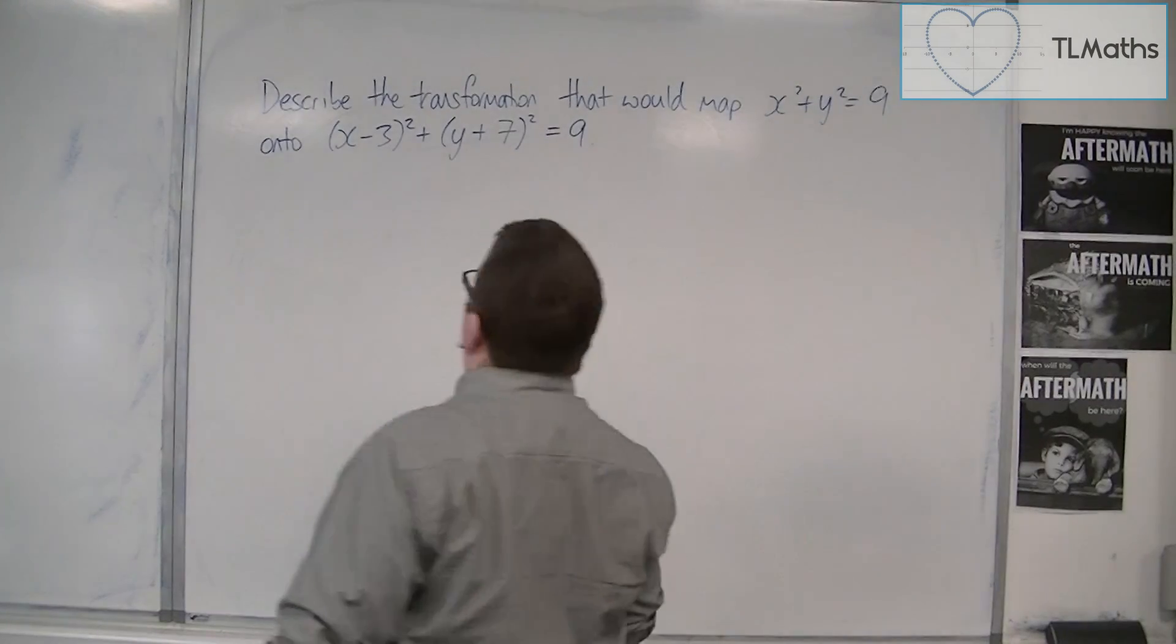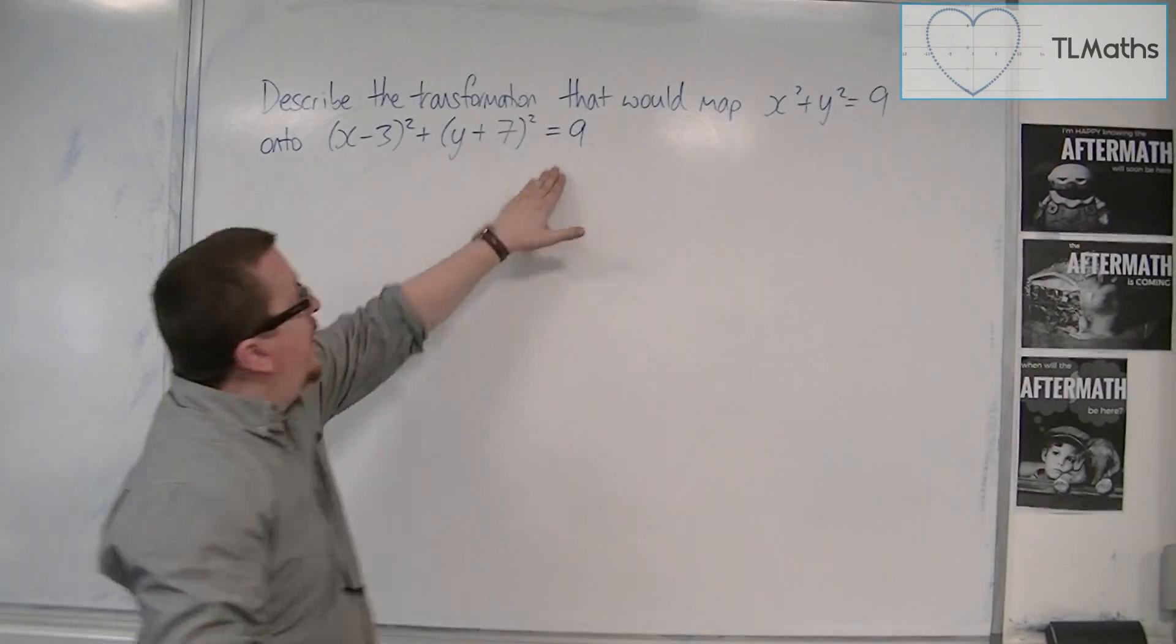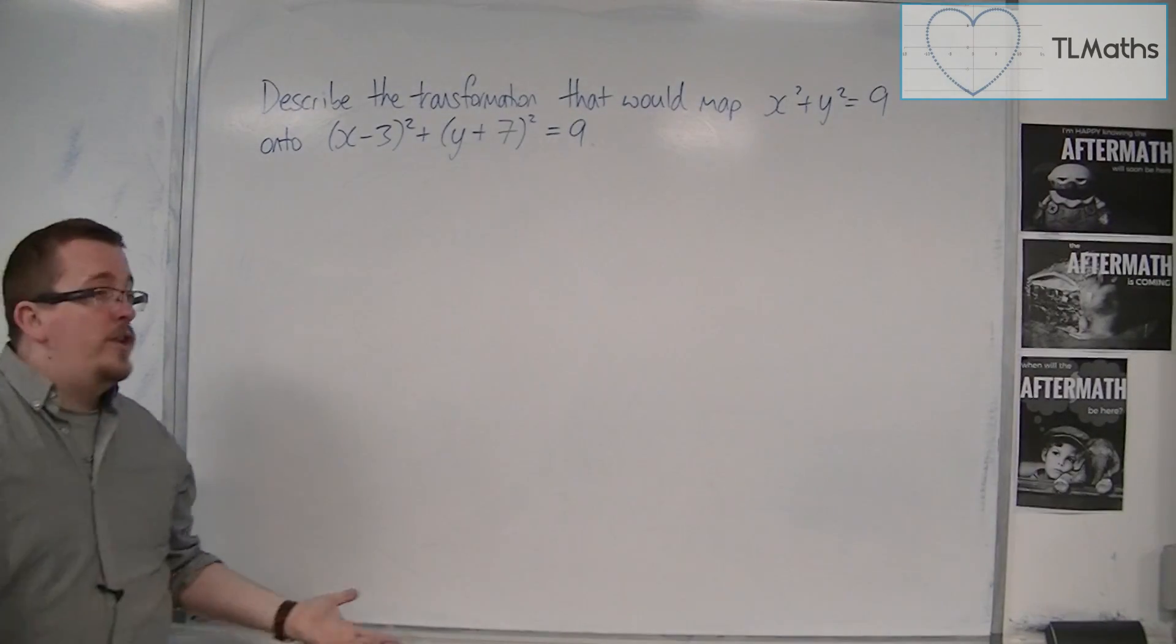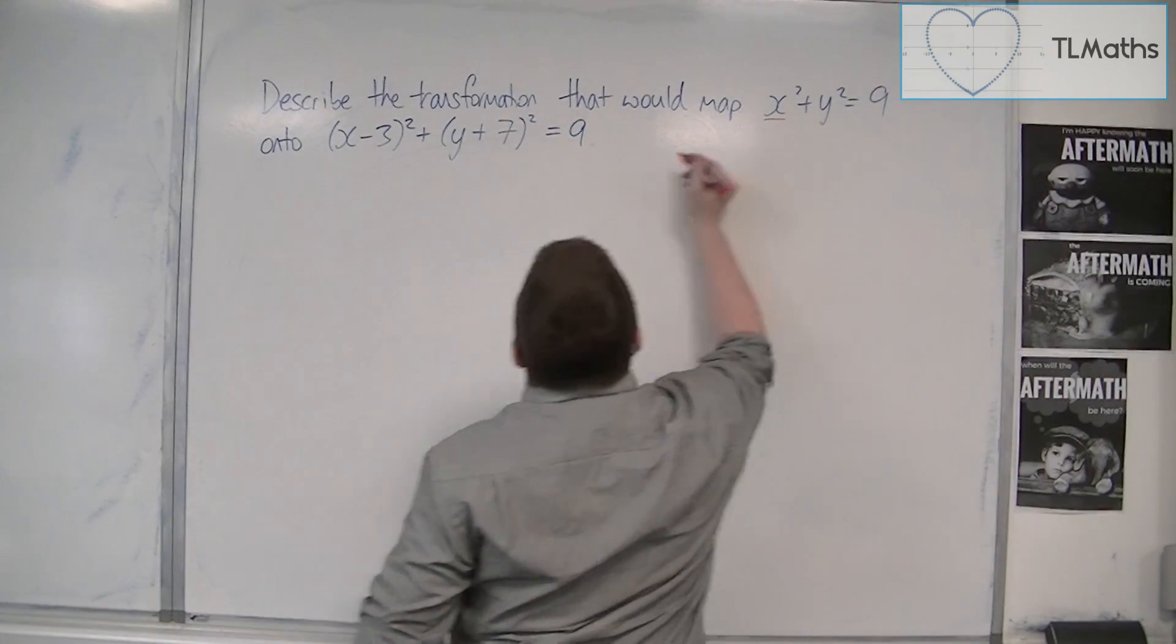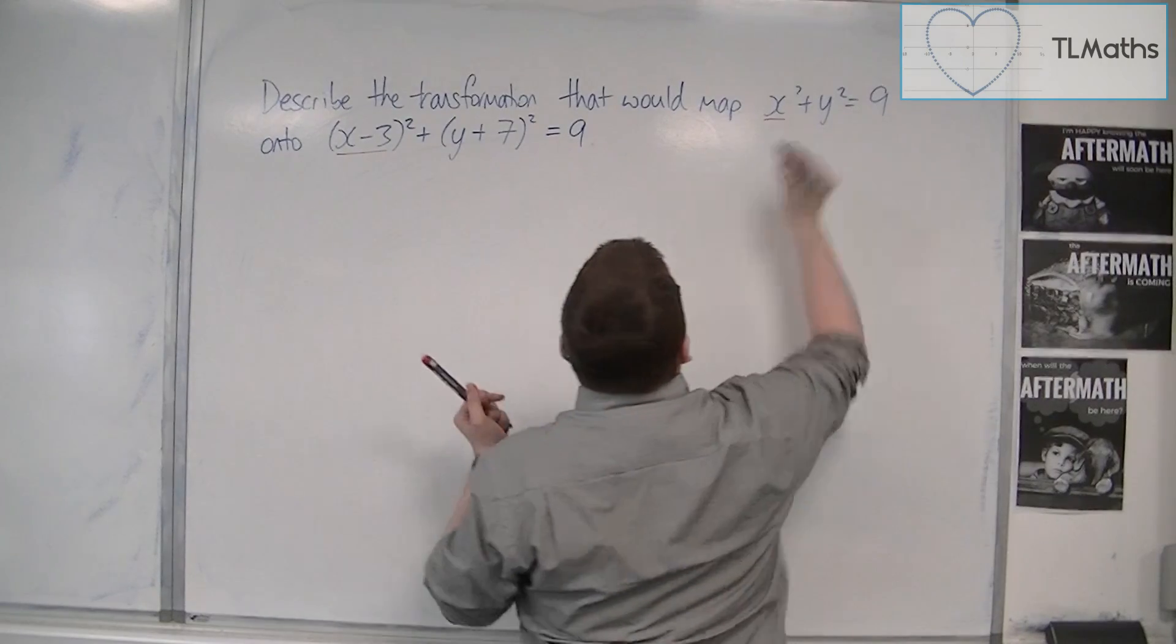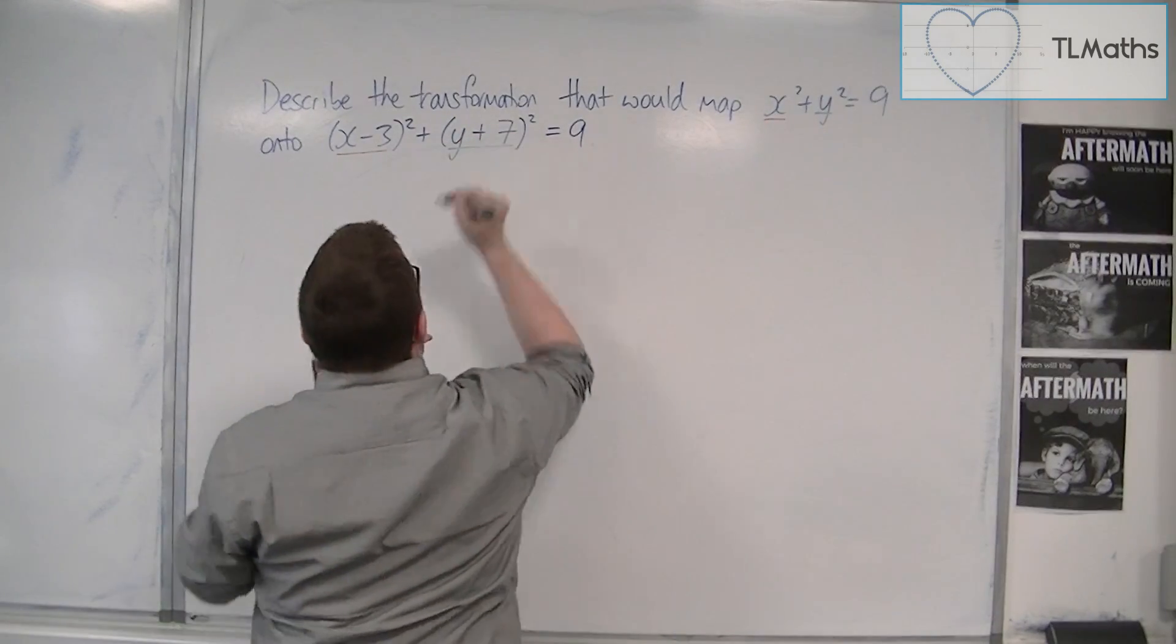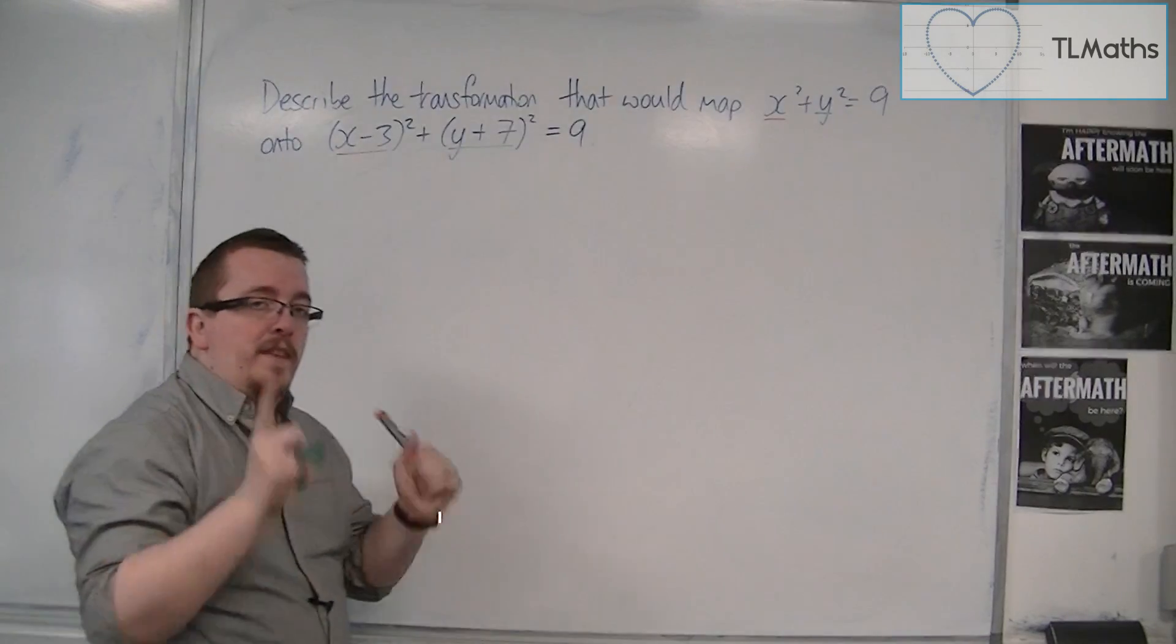So what has happened here? What has changed? Because equals 9 is the same in both cases, so the right hand side of the equation hasn't changed. But we now have the x has been replaced with x minus 3, and the y has been replaced with y plus 7. So there are these key differences.